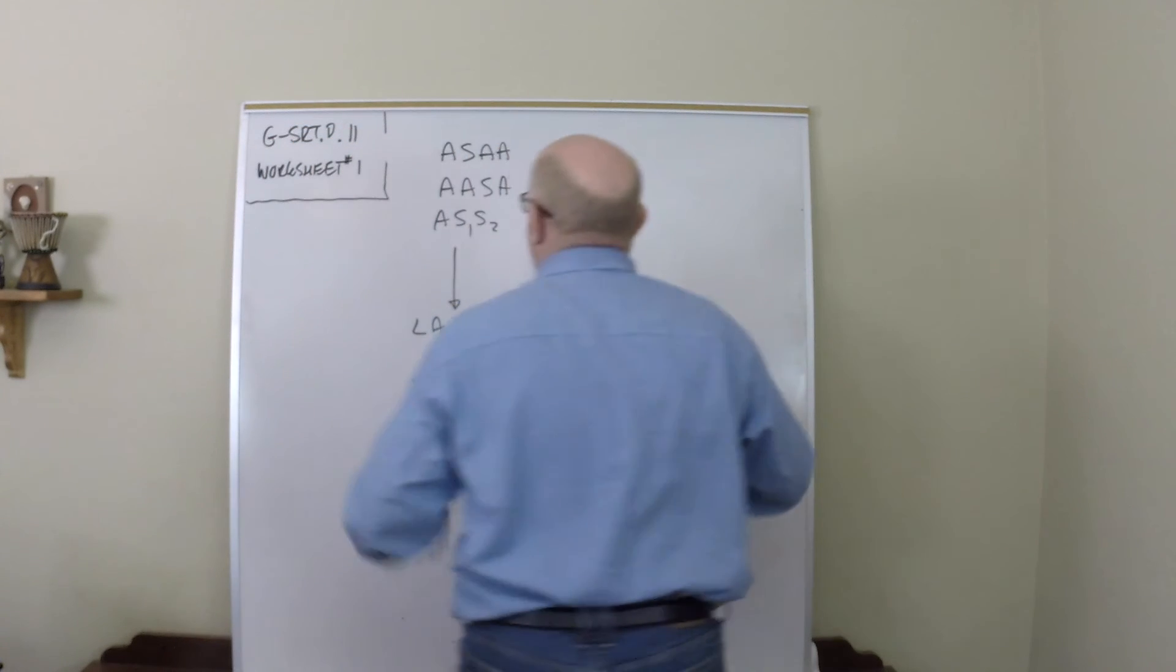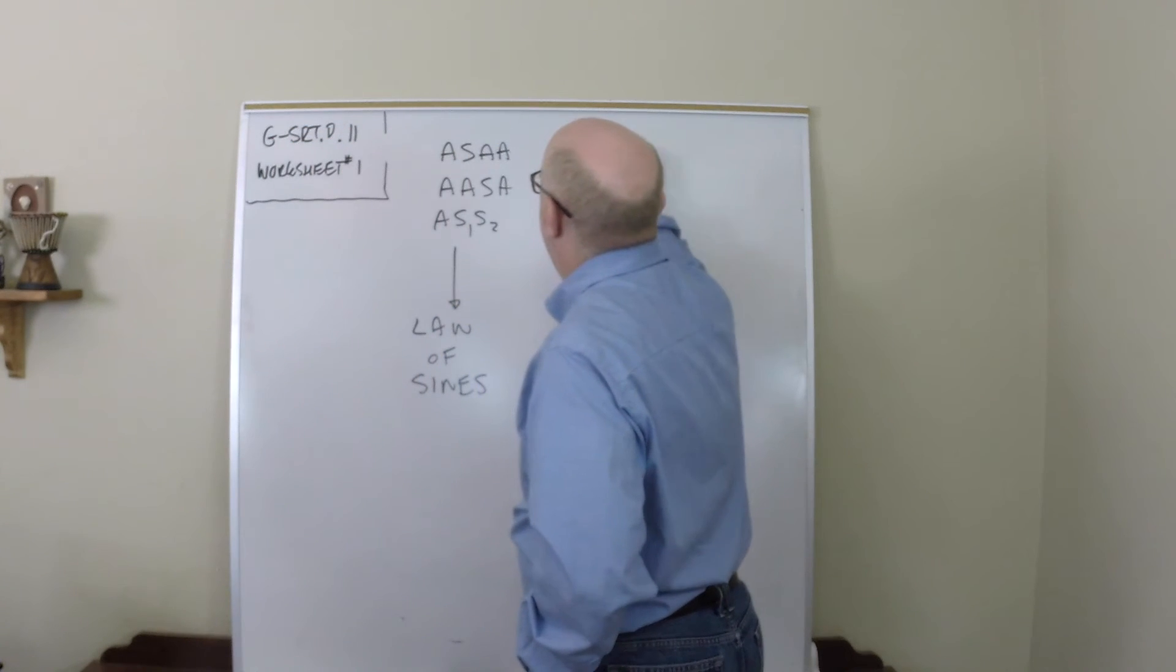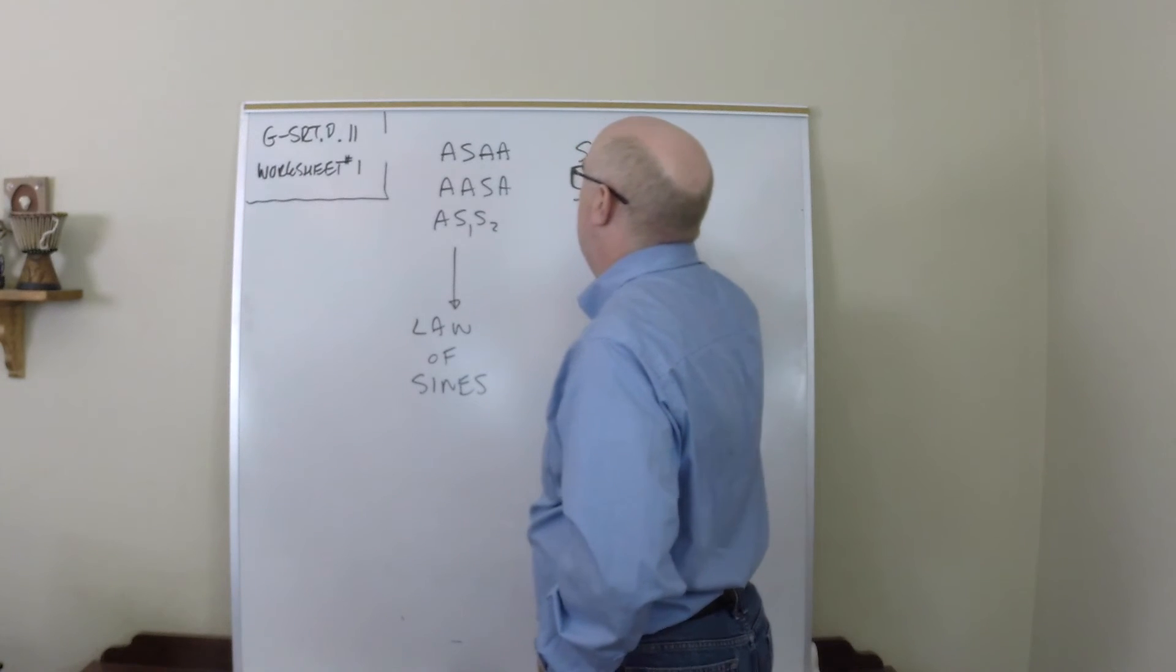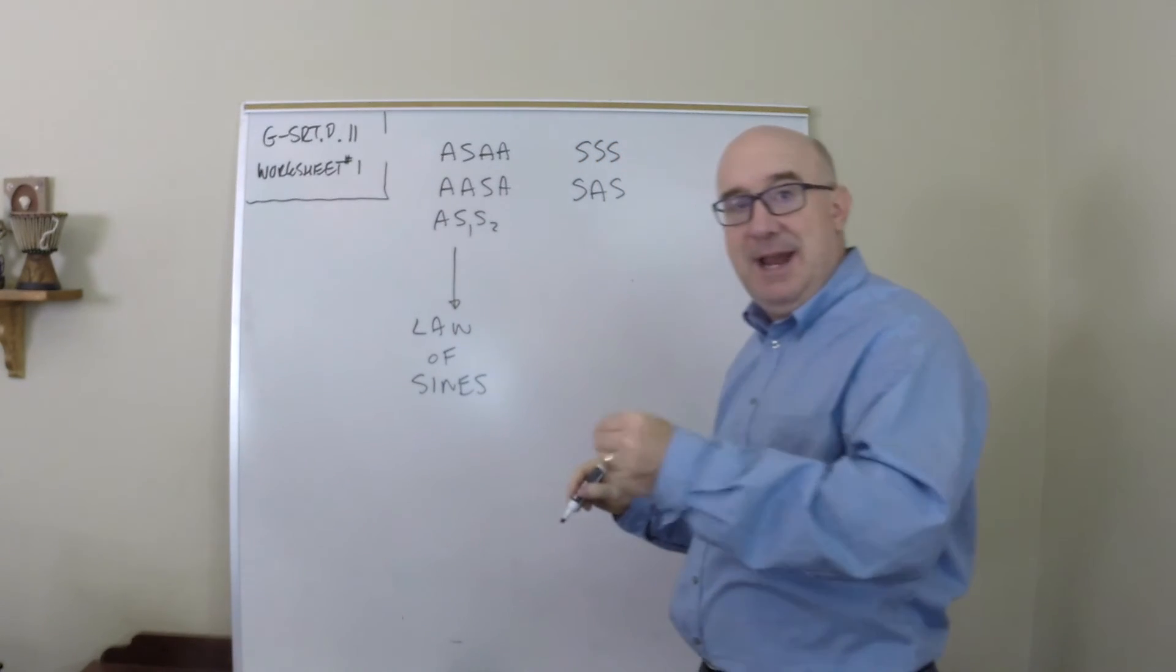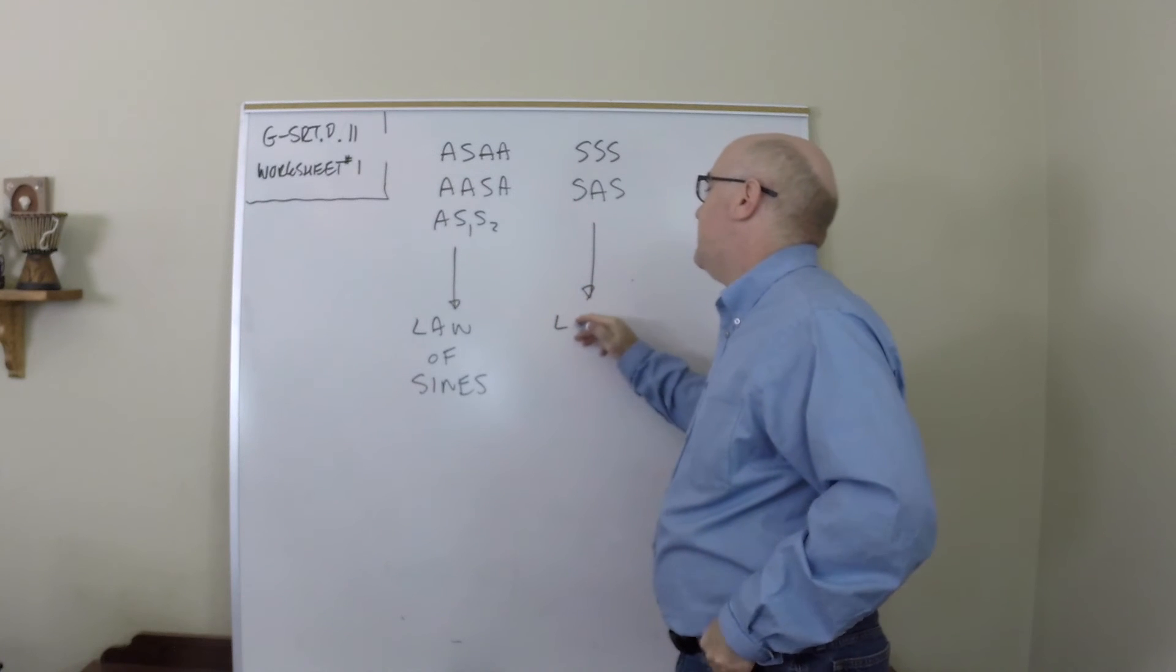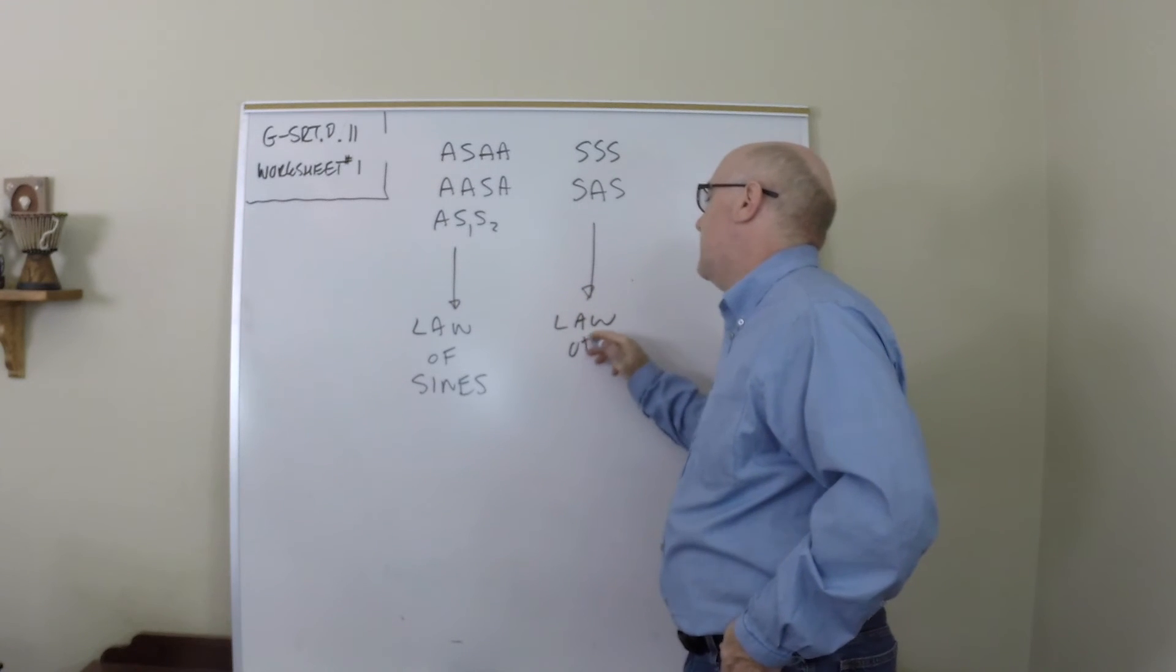And if you do not have that case, you probably have three sides or when it comes in the order of a side, an angle in a side. This is when you proceed with the law of cosines.